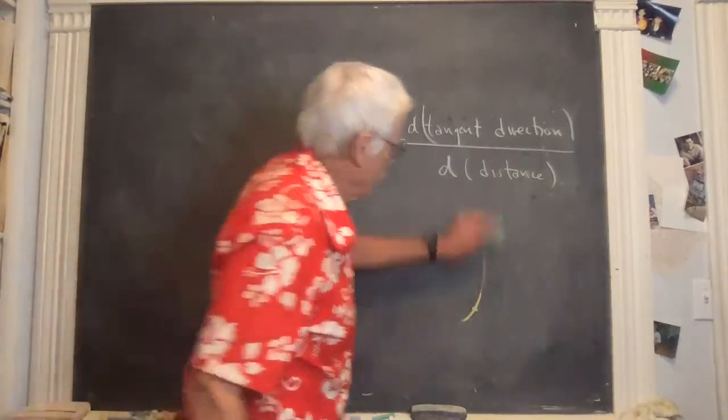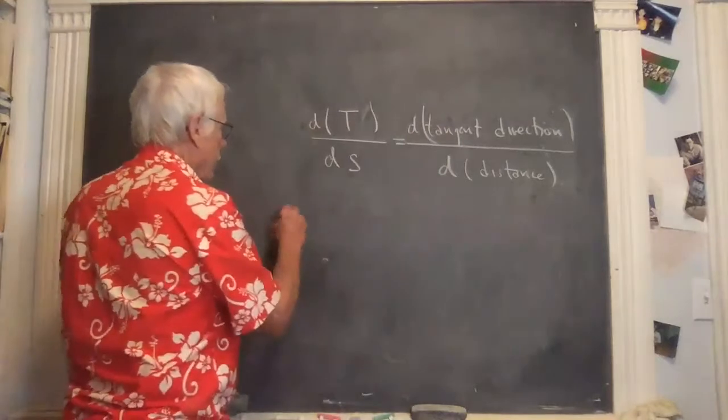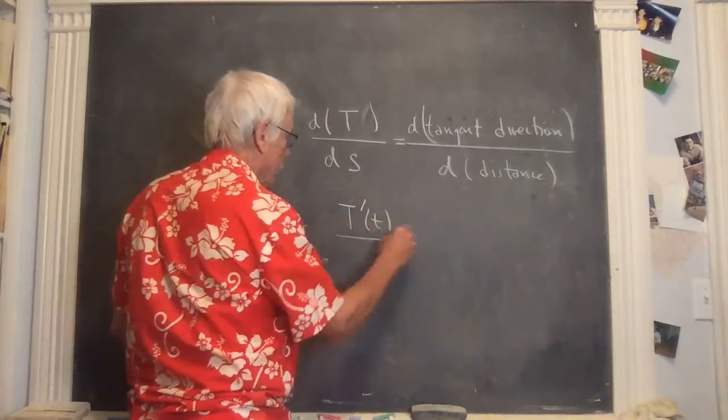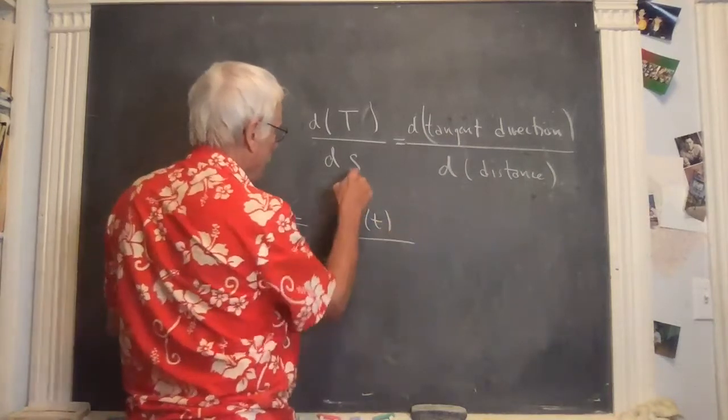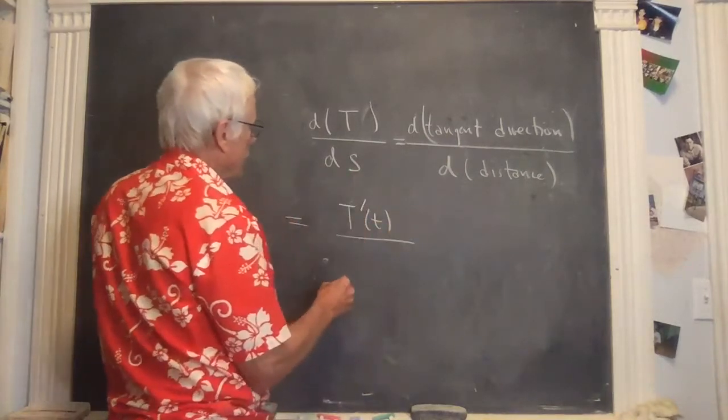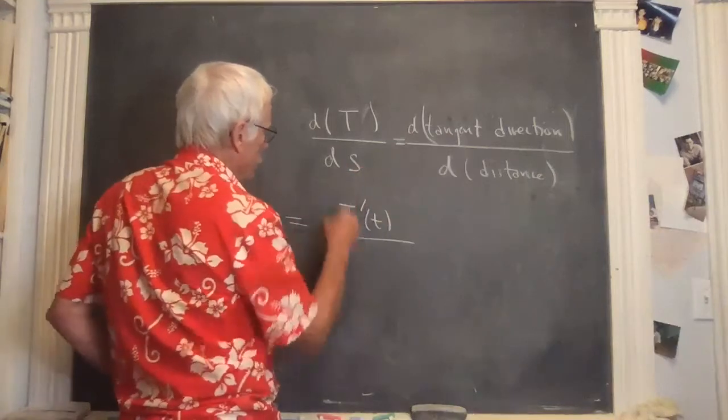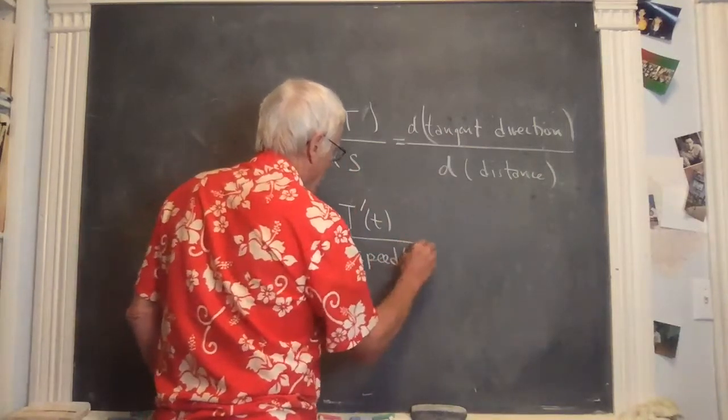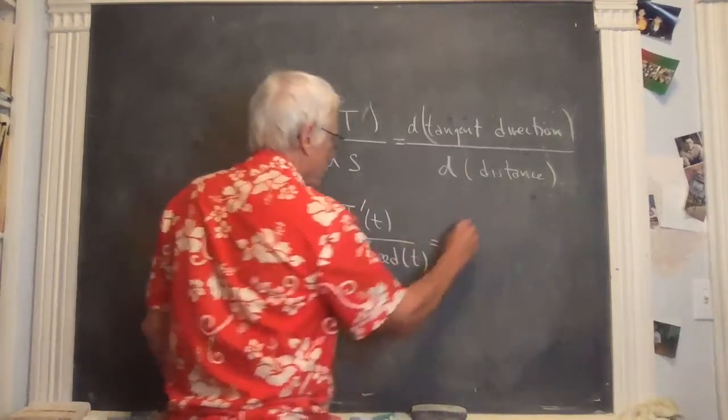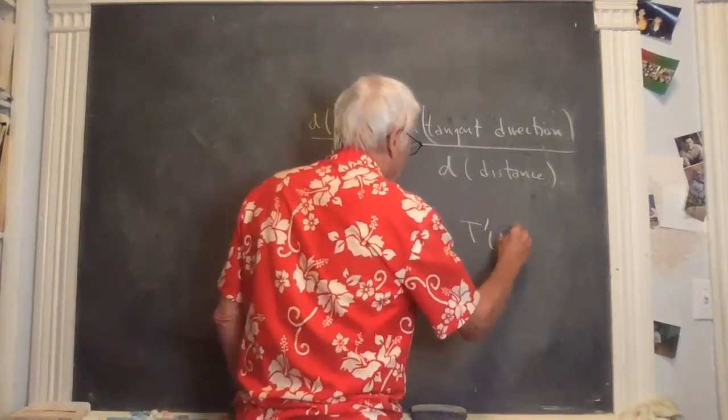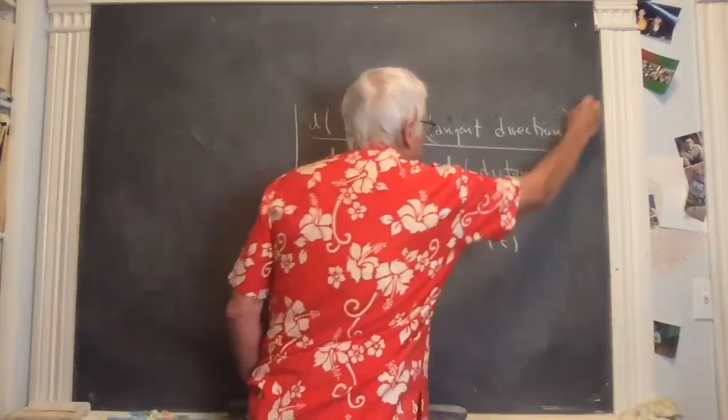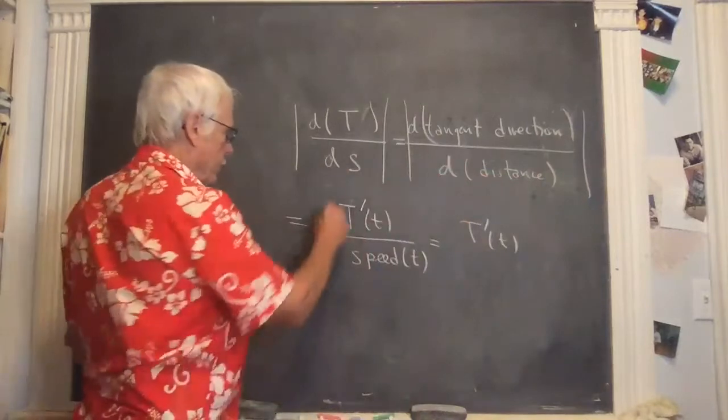So it factors out how quickly or how slowly you are traveling that path, and just looks at the derivative with respect to distance. But using the chain rule, this is the same as T'(t) with time as the variable, divided by, and the derivative of distance with respect to time is speed. So this would be T'(t). This will, by the way, is absolute value of all this. Curvature is an absolute value thing.